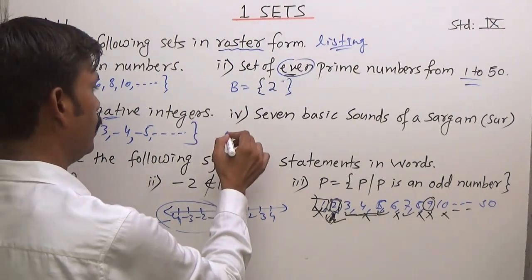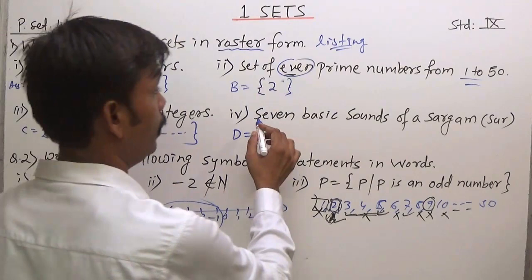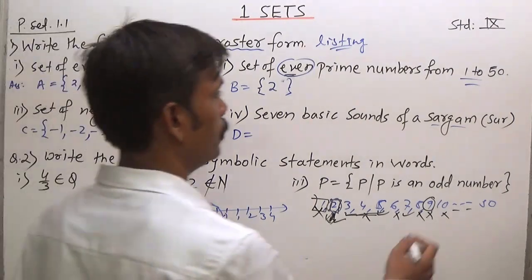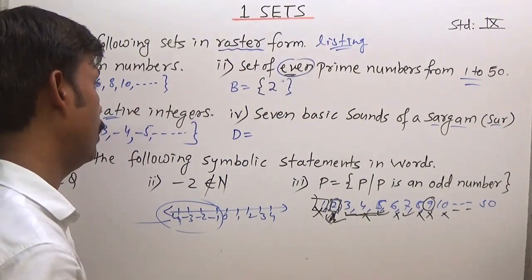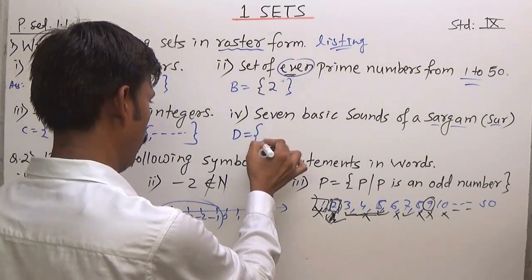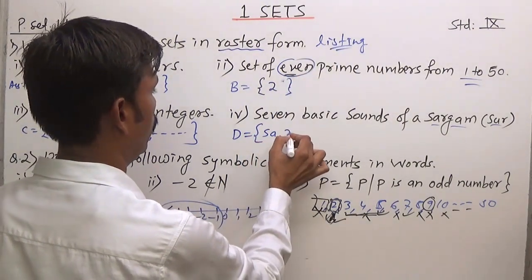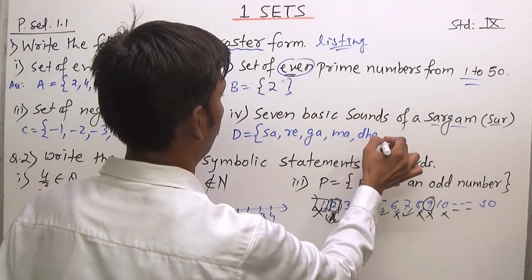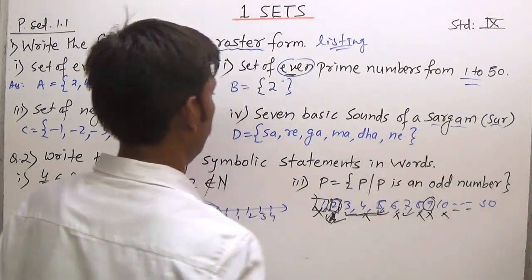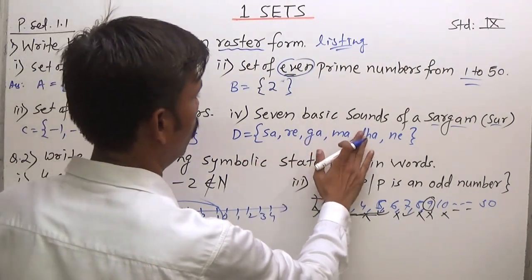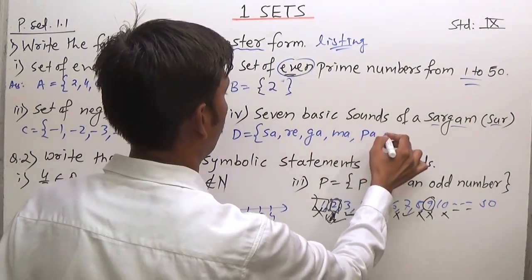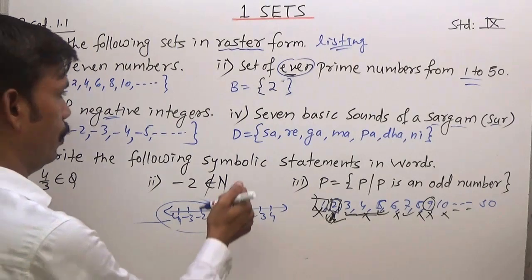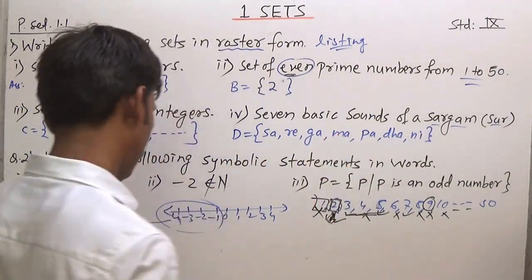Question number 4 is set D: seven basic sounds of sargam, also called 'sur'. The seven basic sounds of sargam are Sa, Re, Ga, Ma, Pa, Da, Ni. So set D = {Sa, Re, Ga, Ma, Pa, Da, Ni}. This is how you write it.